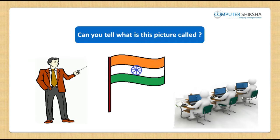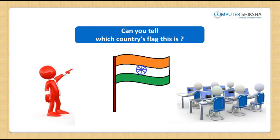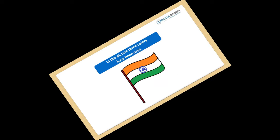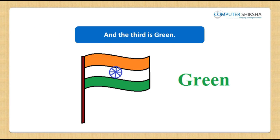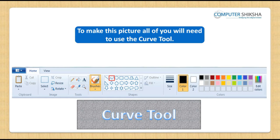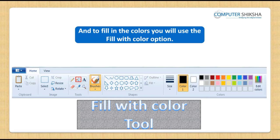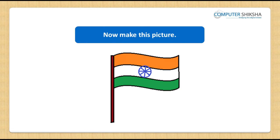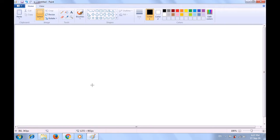Can you tell what this next picture is called? This is a picture of a flag. Can you tell which country's flag this is? Yes, this is India's flag. Which colors have been used in this picture? Three colors have been used: the first is saffron, the second white, and the third is green. Can you all tell how to make this picture? To make it, you will use the curve tool, oval tool, and the line tool, and to fill in colors you will use the fill with color option and also the copy paste option.